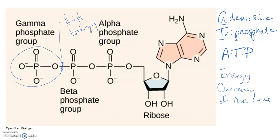ATP is like a $100 bill — when we spend it, we get change back. Cleaving the third phosphate of ATP is like that exchange. What the cell is left with is a molecule of ADP, adenosine diphosphate — 'di' standing for the two remaining phosphates. ADP is not nearly as high-energy, but the cleavage of that last phosphate is what allows the cell to use energy to do cellular work.